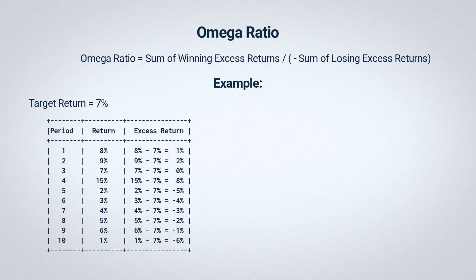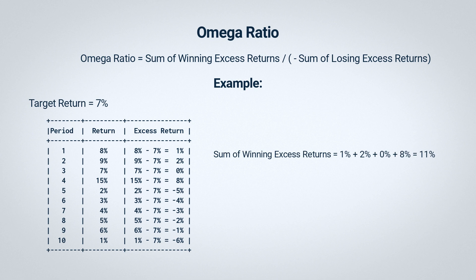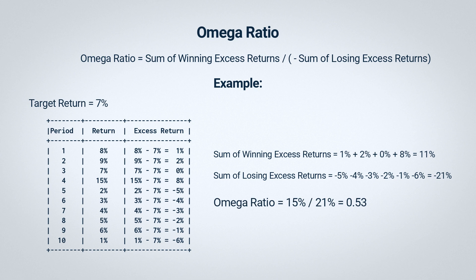The difference between the return we actually get and our target is what we call the excess return. For instance, during the first period, we subtract our target of 7% from the actual return of 8%, giving us an excess return of 1%. During the fifth period, our return is 2%, which is less than our target. Subtracting our target from the actual return, we end up with a negative excess return of minus 5%. We label positive excess returns as wins and the negative ones as losses. Adding these up gives us a sum of winning excess returns of 11%, and a sum of losing excess returns of minus 21%. To get the Omega Ratio, we divide the sum of wins by the absolute sum of losses. This gives us a ratio of 0.53.